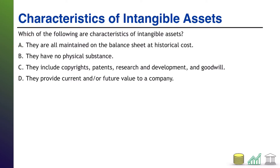How about B? They have no physical substance. That is definitely true — that is the core characteristic of an intangible asset. It's not a building, not equipment, not land; it's not something you can touch. Option C: they include copyrights, patents, research and development, and goodwill. However, intangible assets do not include research and development. Therefore, C is not true either. Research and development can create an intangible asset, but the research and development itself is not an intangible.